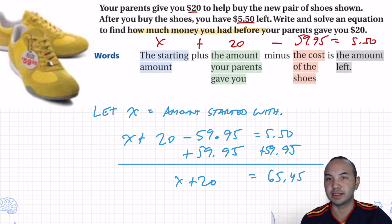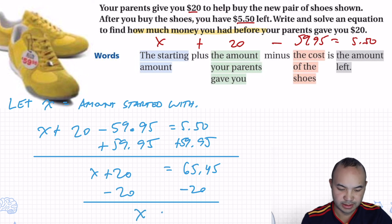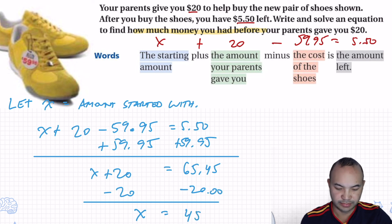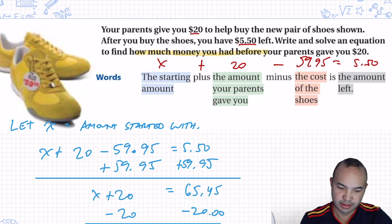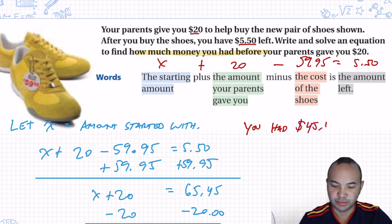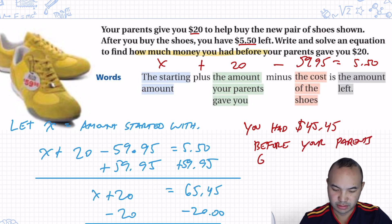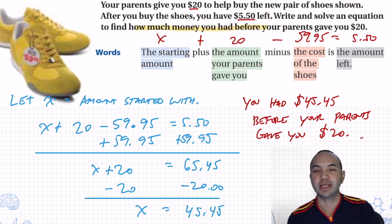Now I still have plus 20, so I do the opposite and subtract 20 from both sides. X equals $65.45 minus $20, which is $45.45. Since this is a word problem, the answer is: you had $45.45 before your parents gave you $20. That was a tough one because you had two things to add and subtract, but hopefully that was helpful. See you guys next time.